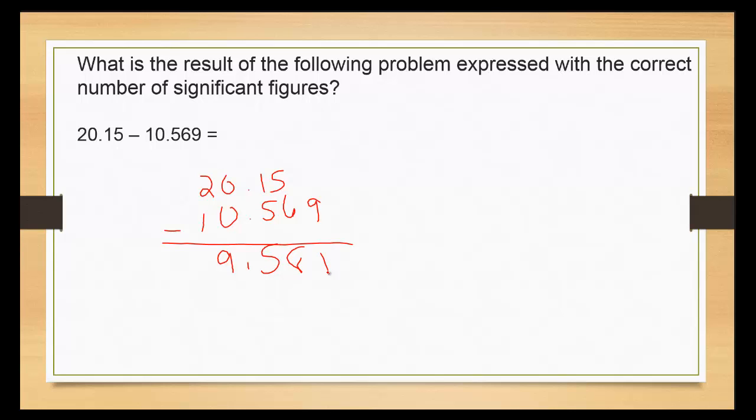Now let's look at those place values. This one ends at the five. The second one ends at the nine. So I want to draw a line where the first one ends. That means I'm going to round it off to the eight. So our final answer is 9.58.